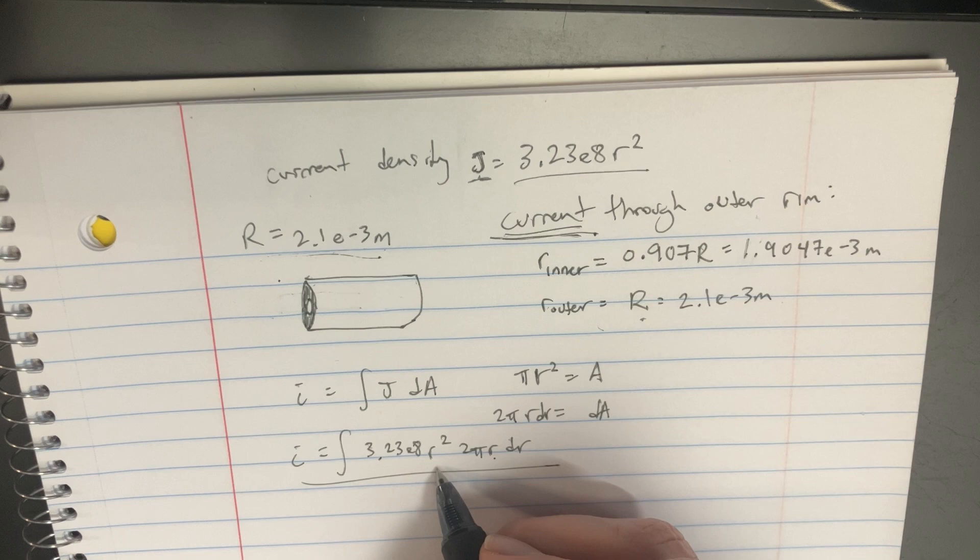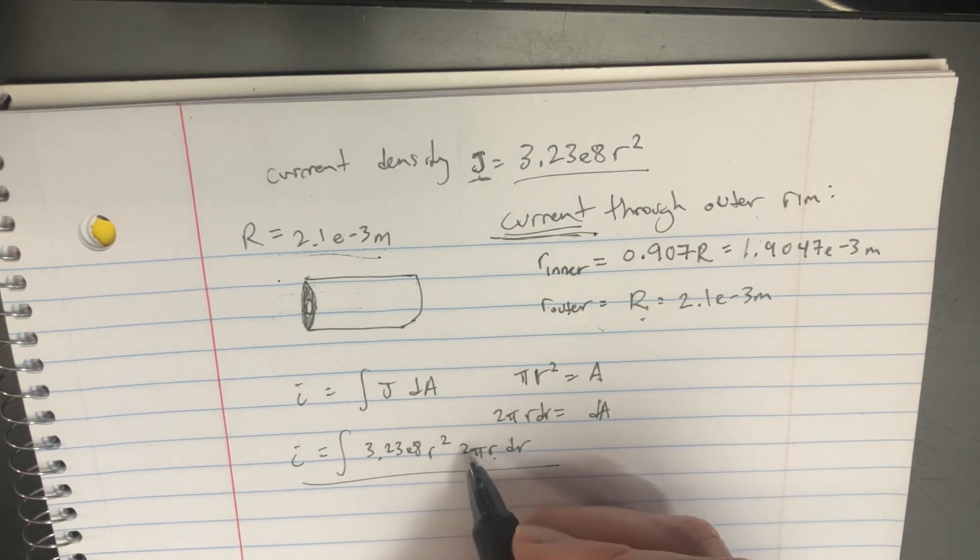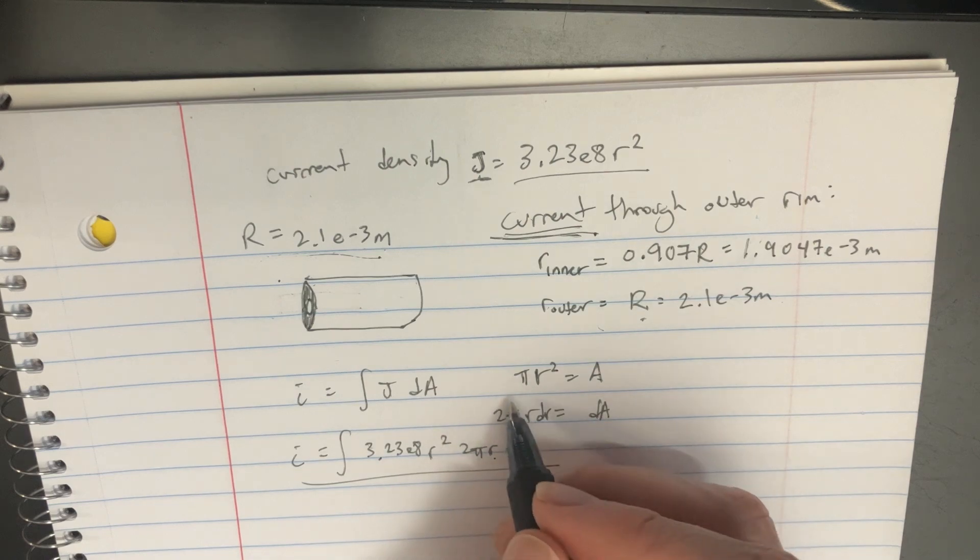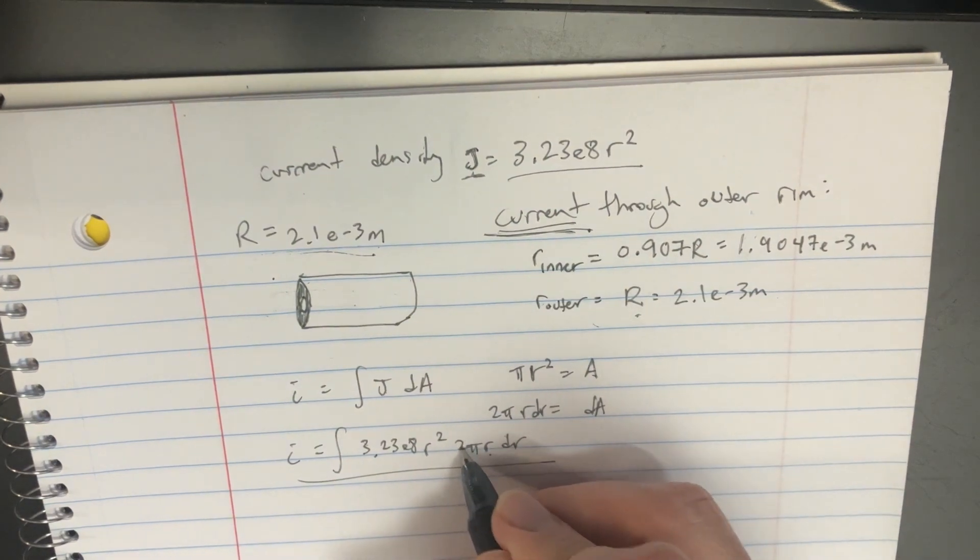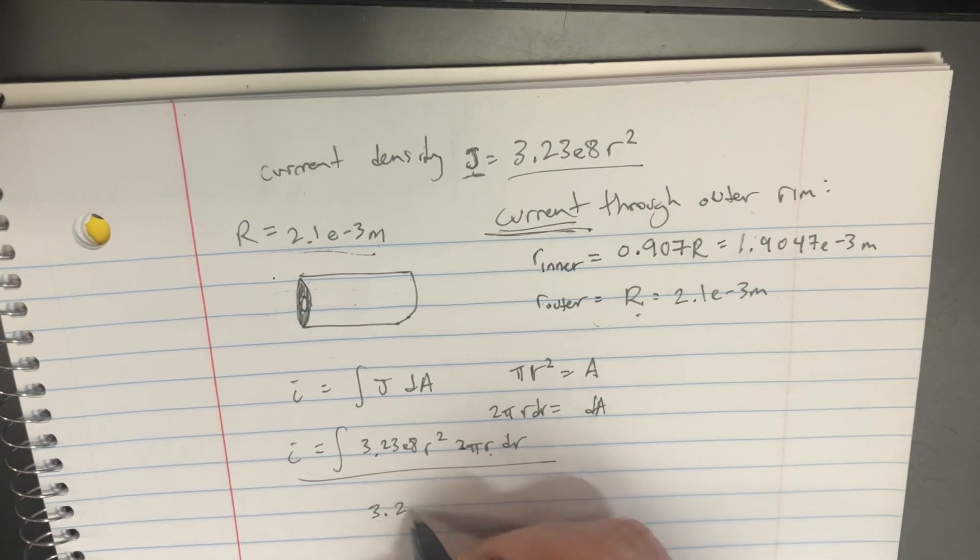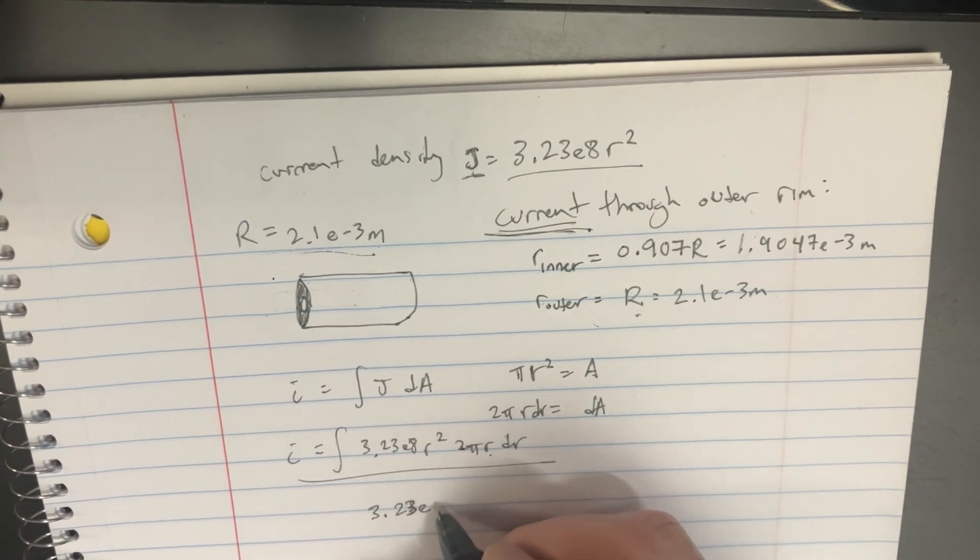You can see it's going to be more like r³, so we can put those together. Then we take the integral. It's r⁴ divided by 4, keeping in mind there's a 2 here. That's going to be 3.23e8 times the integral.